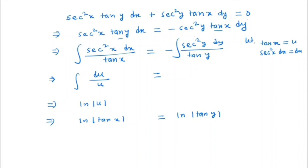And for the constant we will take ln c for simplifying. So we have ln tan x = ln tan y + ln c, which means tan x = c tan y, and this is the general solution.